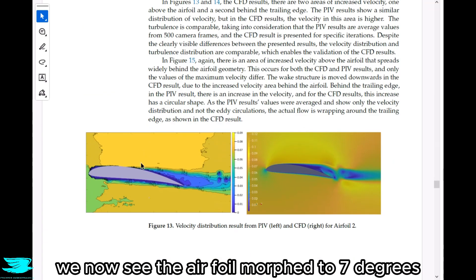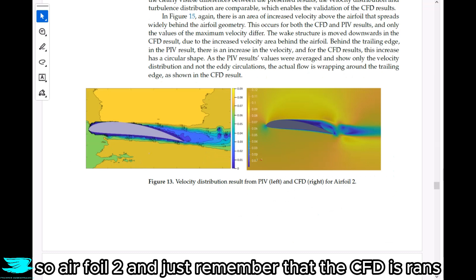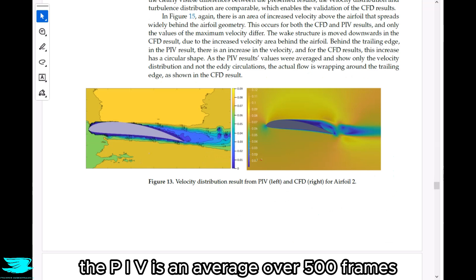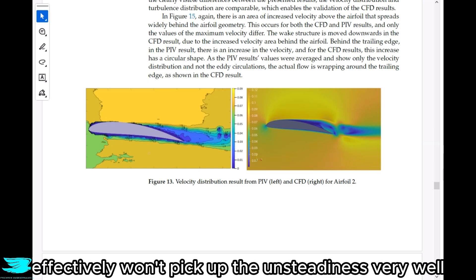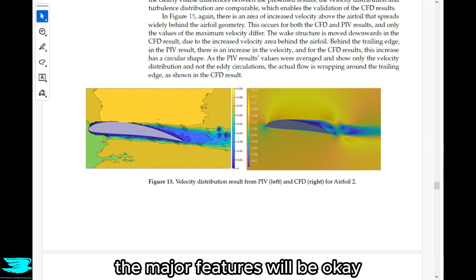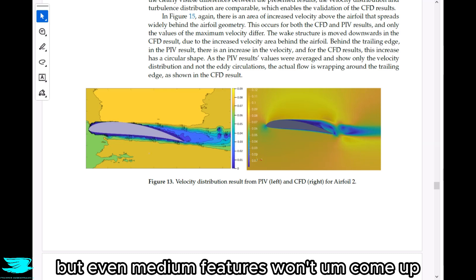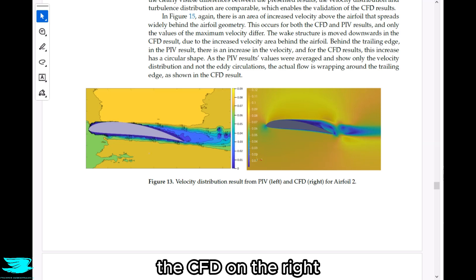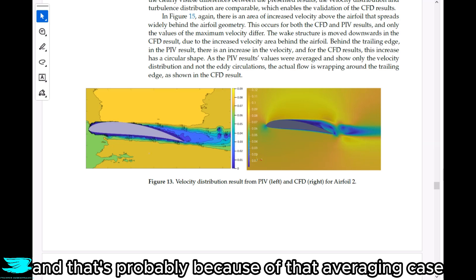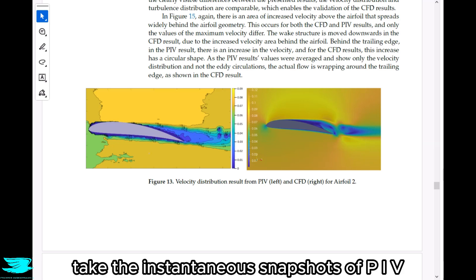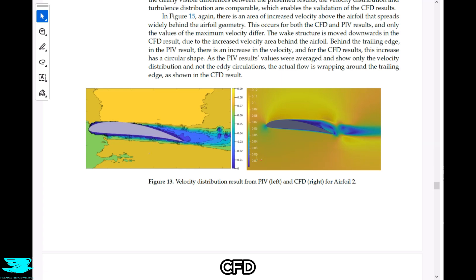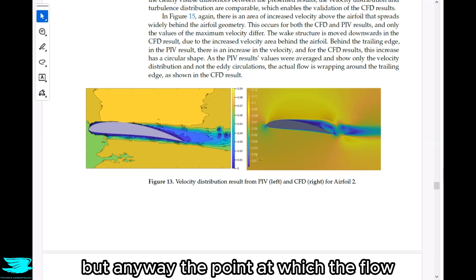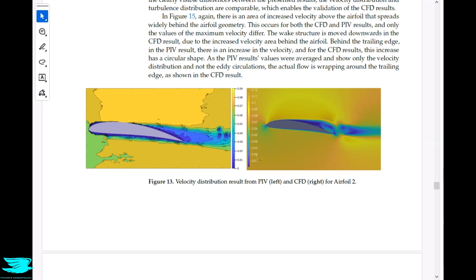Now moving to figure 13, we now see the airfoil morphed to seven degrees, so airfoil two. And just remember that the CFD is RANS. The PIV is an average over 500 frames, but that doesn't mean that it's the same as the RANS because RANS effectively won't pick up the unsteadiness very well. The major features will be okay, but even medium features won't come up. Anyway, the wakes look pretty similar. The CFD on the right shows this little wobble behind the trailing edge. We don't get that in the PIV and that's probably because of that averaging. The point at which the flow starts to separate over the airfoil is similar between the two, so this is good agreement.